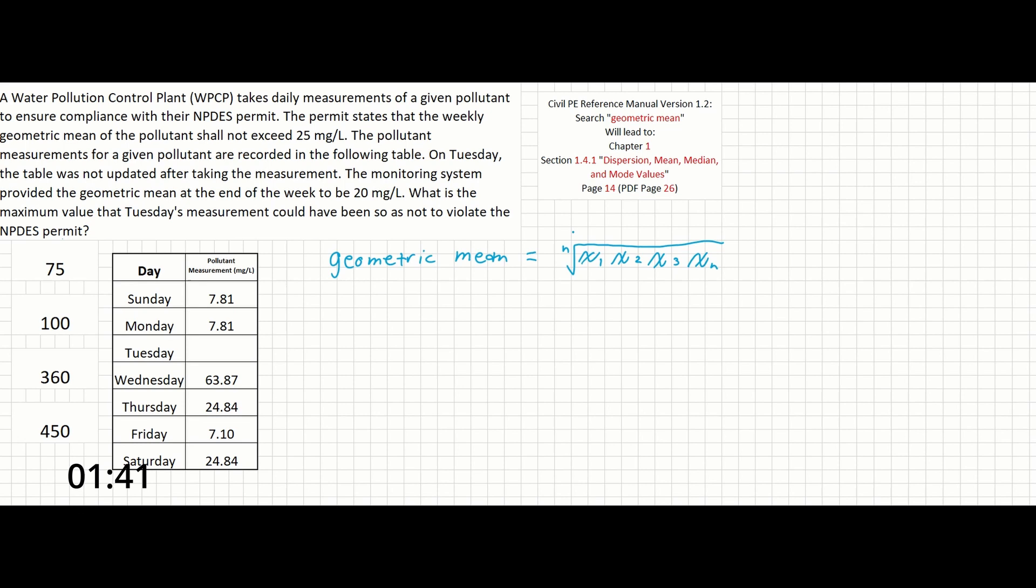There is one small trick in this problem worth pointing out in case it isn't apparent. The problem provides you with the geometric mean calculated at the end of the week, but then asks what the maximum value could have been on the missing day that would not have exceeded the NPDES standard.